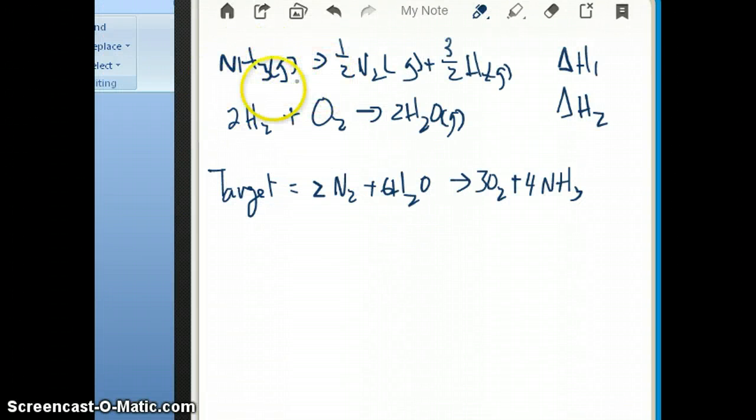If you look at these reactions, this is the given and this is your target. Hess's Law is really pretty much like balancing equations. It's a trial and error process. However, what you can always keep in mind is that you want to find a unique species if you can.